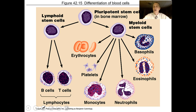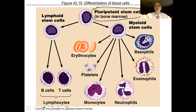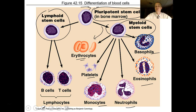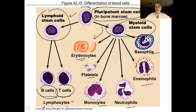Blood cells are made from bone marrow. Inside red bone marrow there are pluripotent cells, which can become all different kinds of cells. These pluripotent cells form stem cells. Some stem cells are myeloid in nature and can form red blood cells, platelets, monocytes, neutrophils, eosinophils, and basophils. Some are lymphoid and form B cells and T cells, also known as lymphocytes. If your bone marrow stops producing blood cells, you don't live very long.